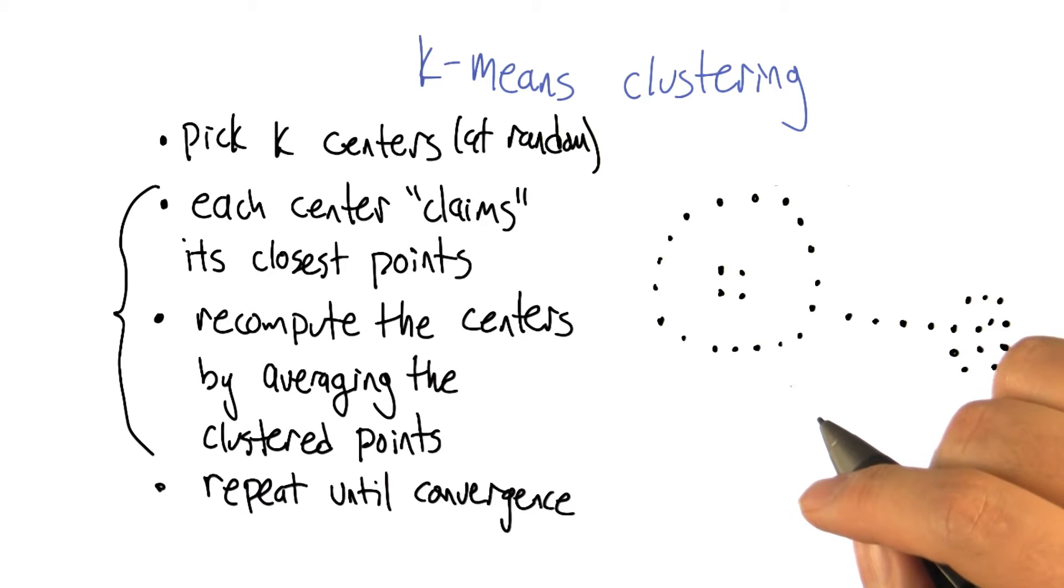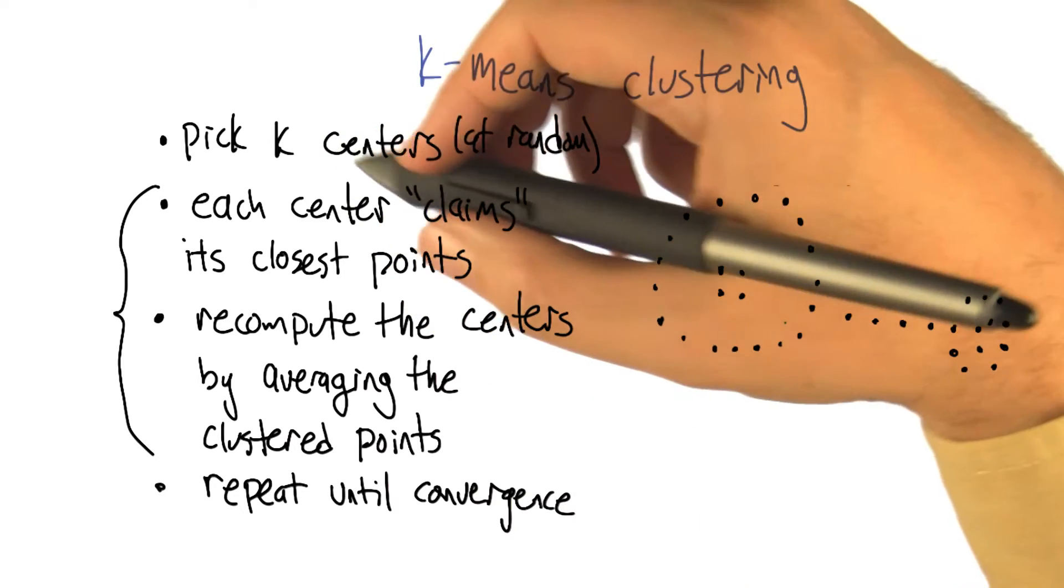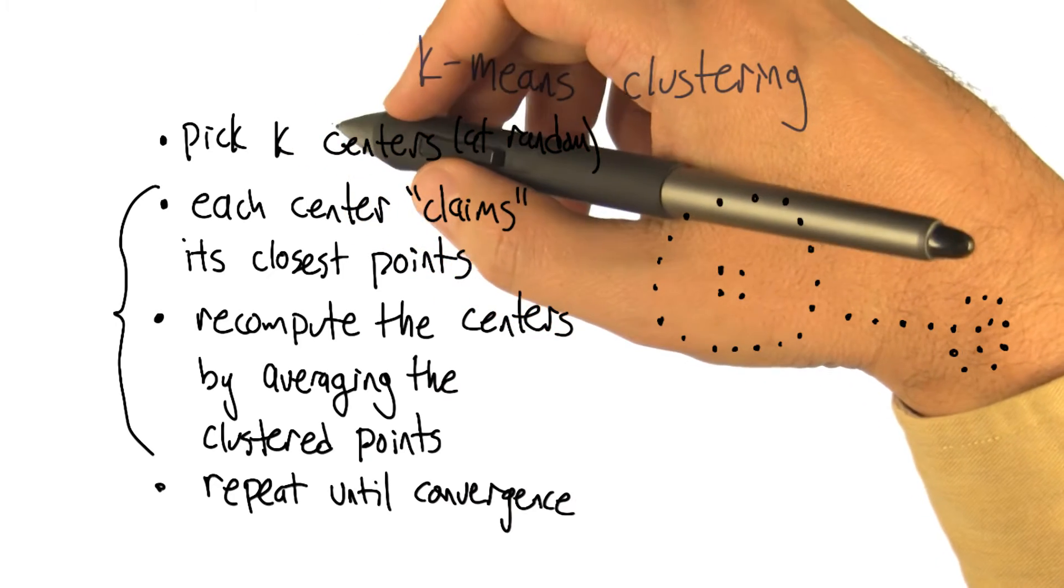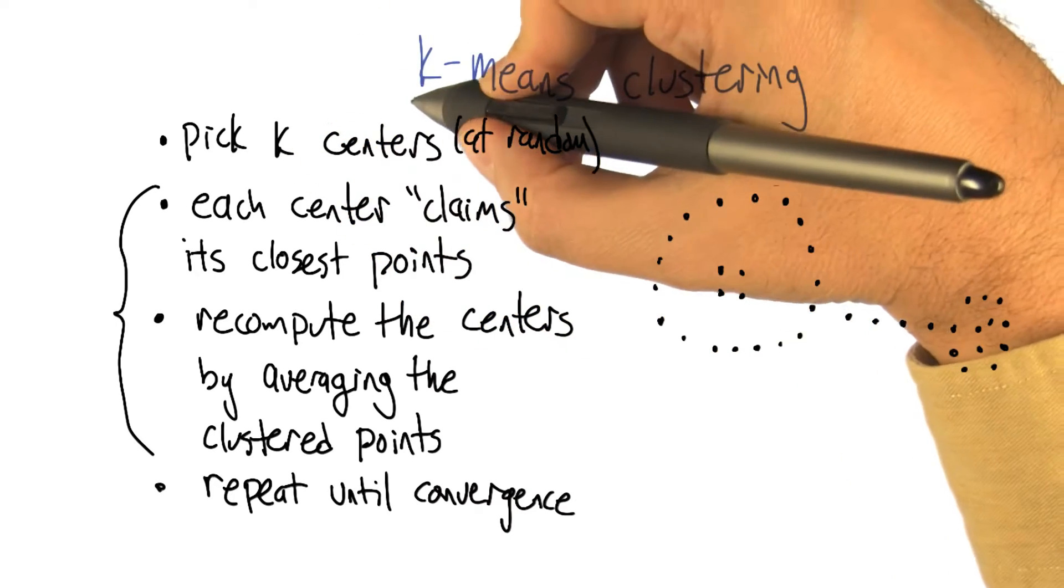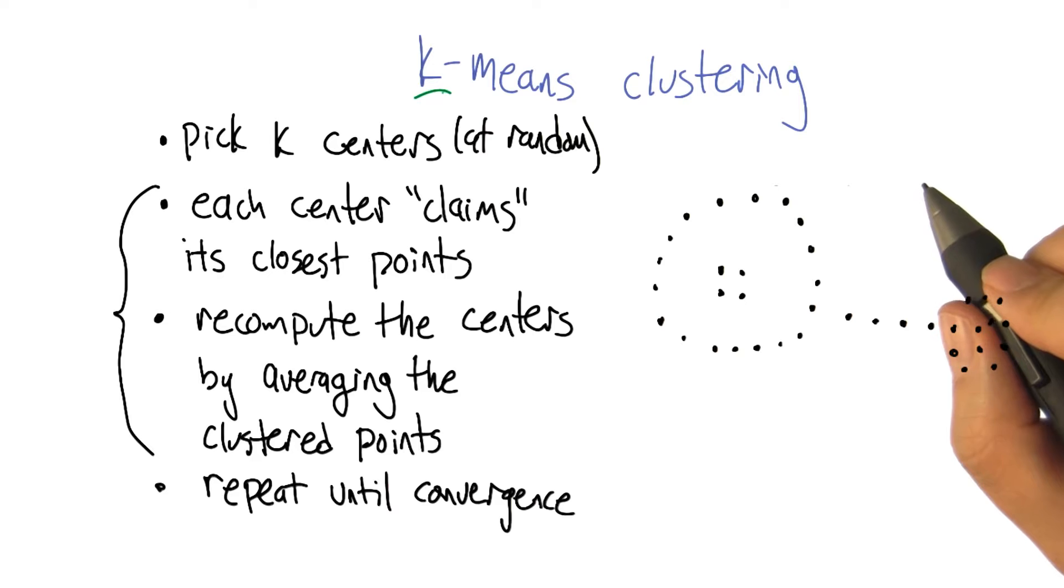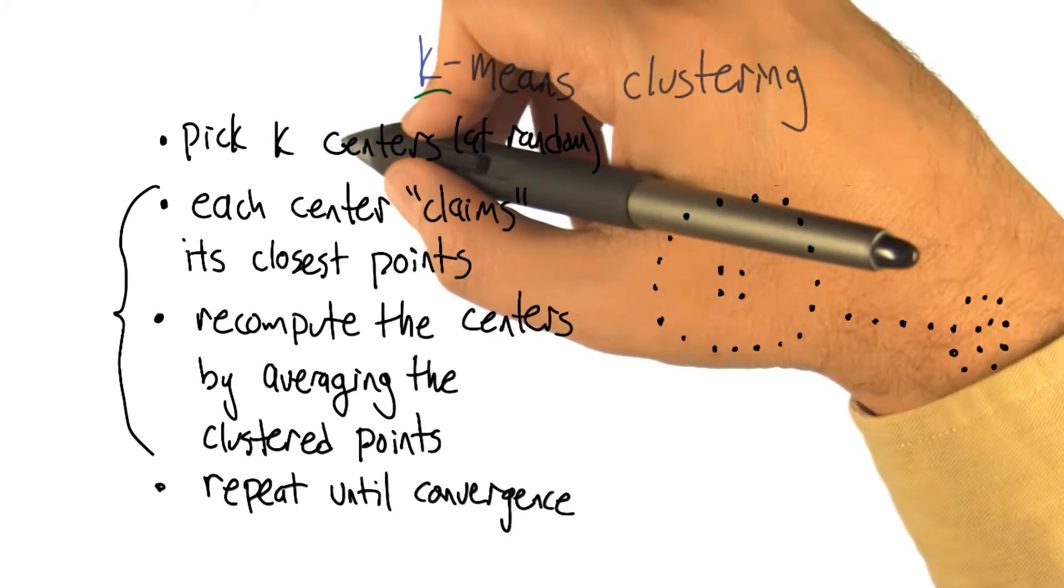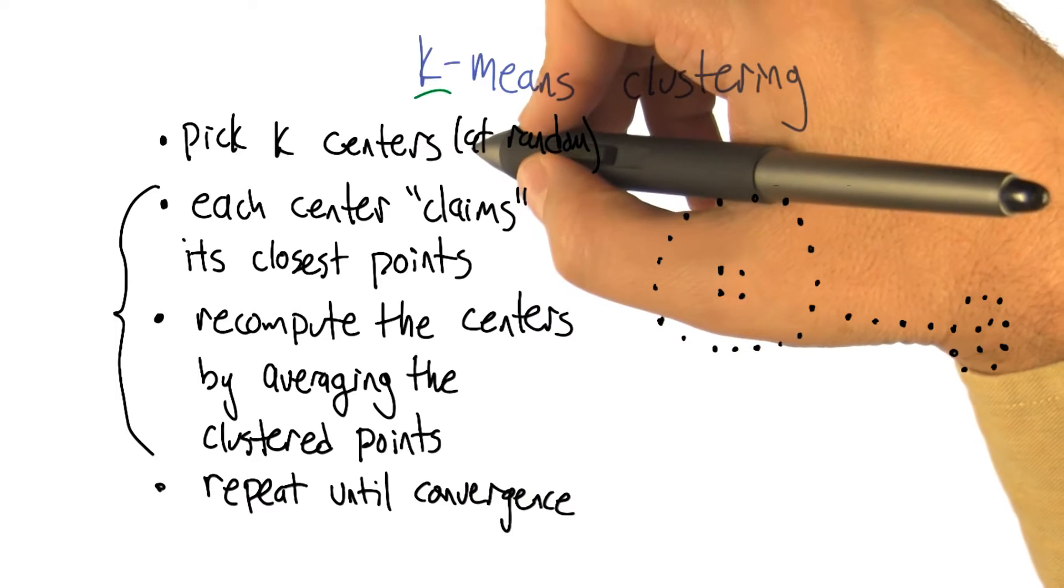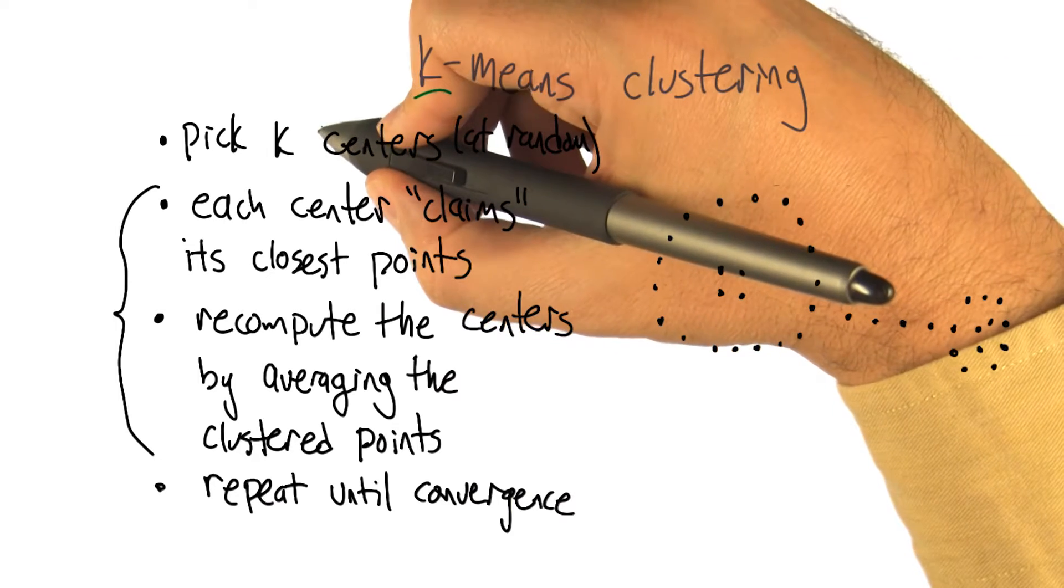So k-means clustering is what we're going to talk about next. The basic flow of the algorithm is like this: We're going to first pick a k. k is going to be the number of clusters that we're going to try to produce. And the way it's going to do it is by picking k of the points at random to be centers.